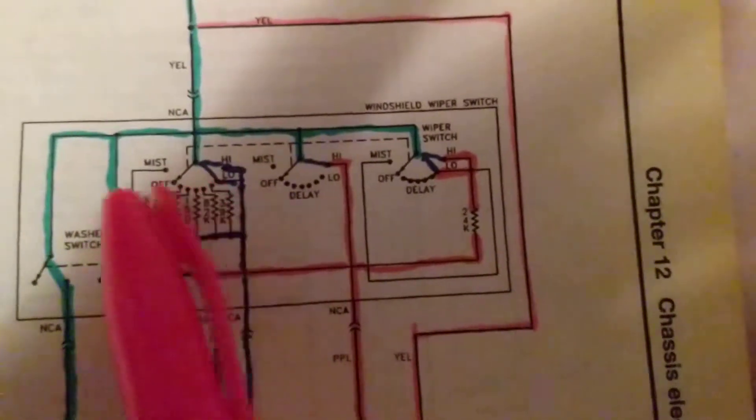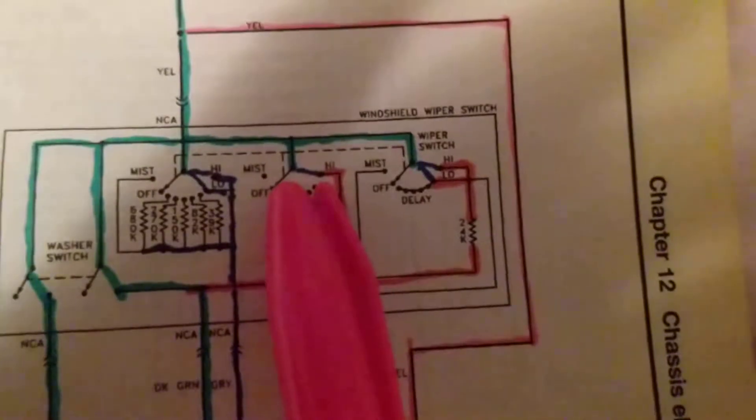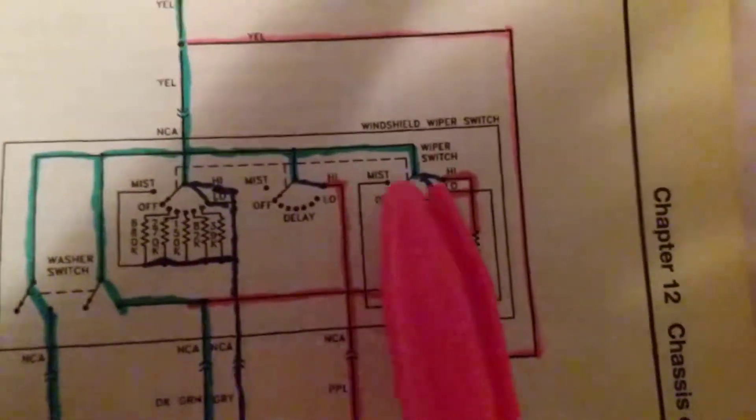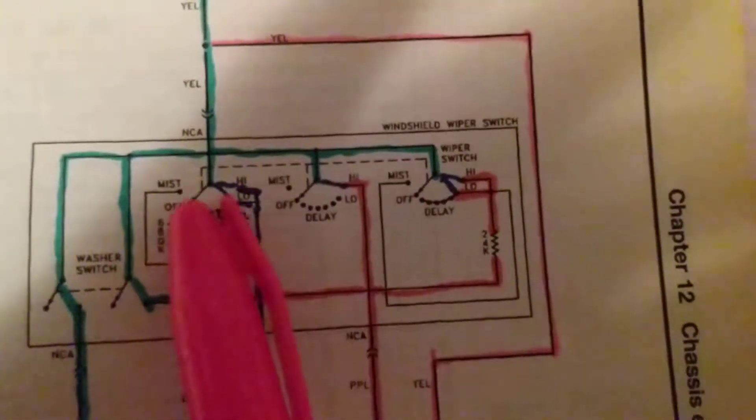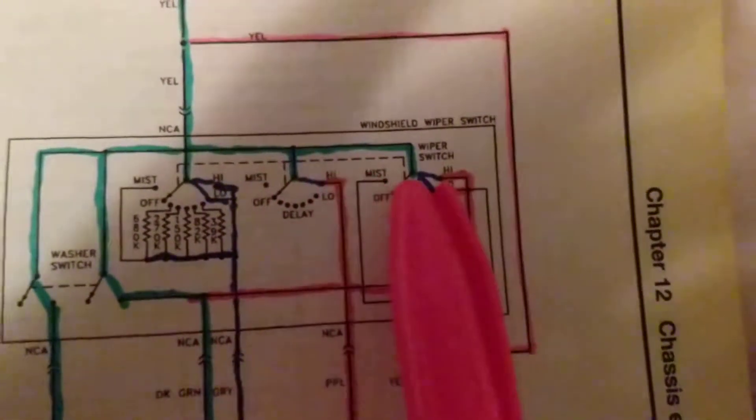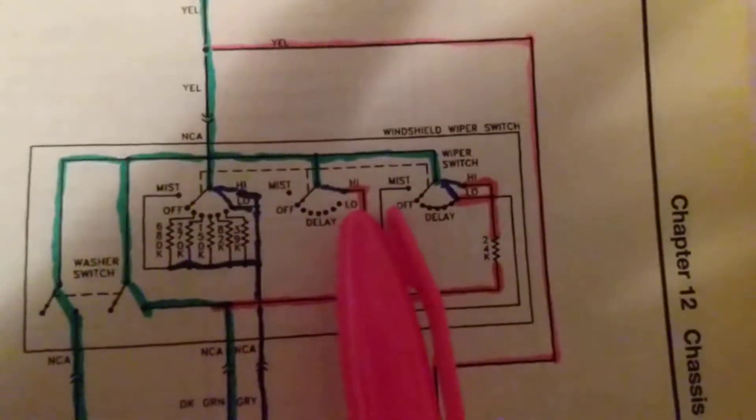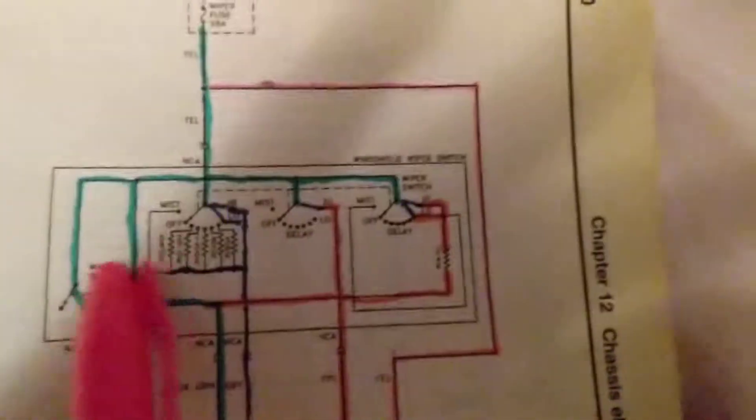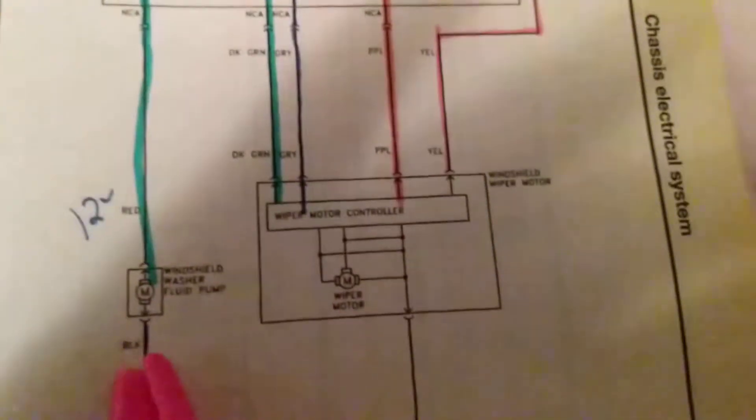So for example, if I'm moving this one to low, this one will also move to low. If I'm moving this one to high speed, this one will go to high speed. All three will go to the same position on the switch.